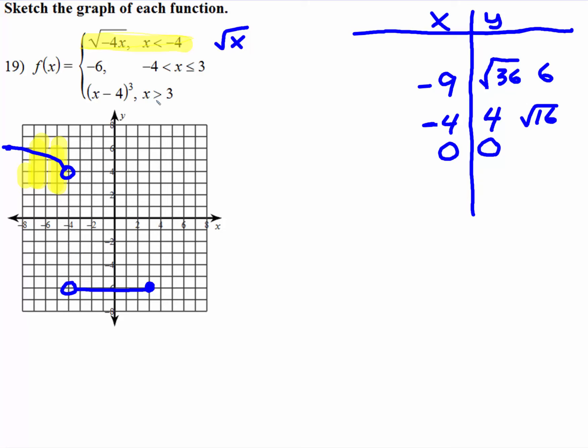And the last piece is what's happening for all the values that are greater than 3. What's happening over here? Well, the parent function is a cube root. So remember a cube root normally looks like this. It looks something like that. Well, all we care about is, first of all, the values where x is greater than 3.